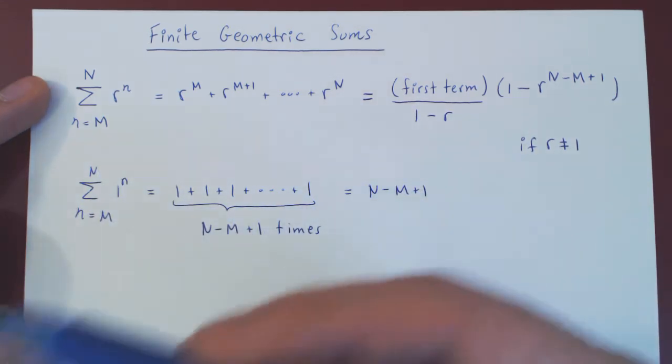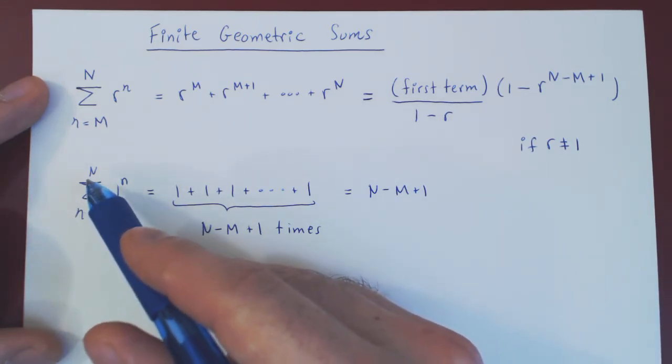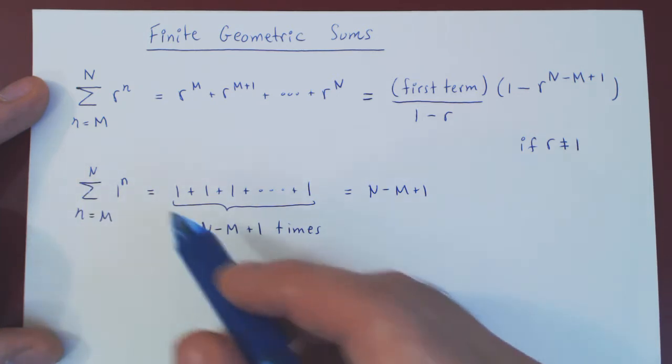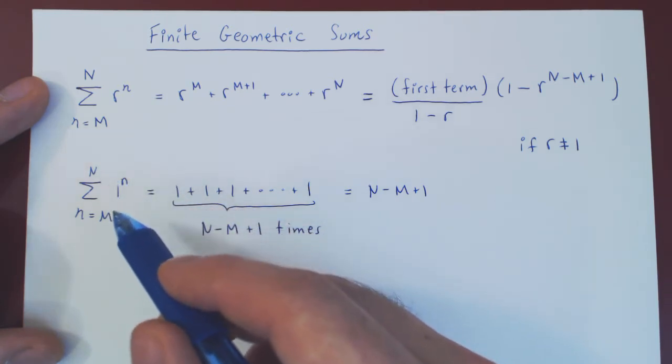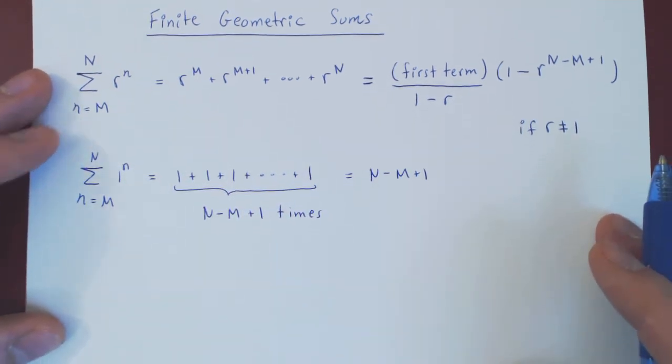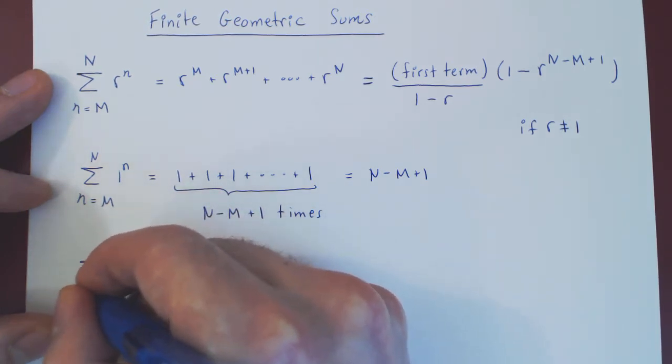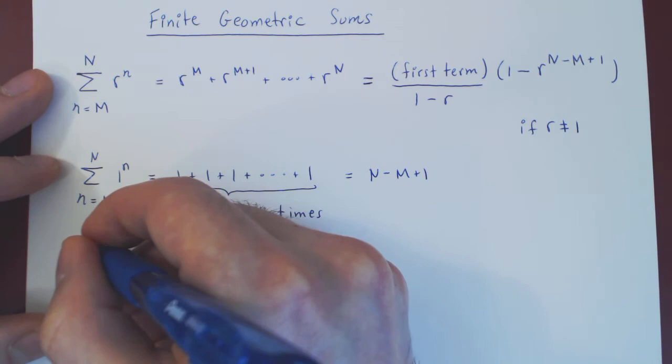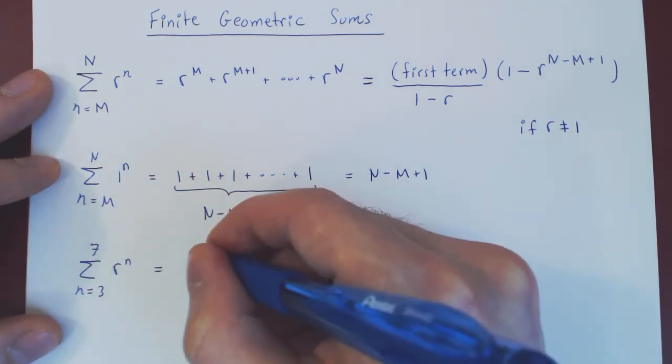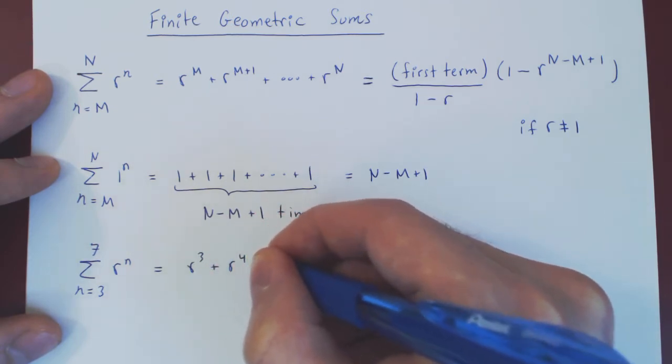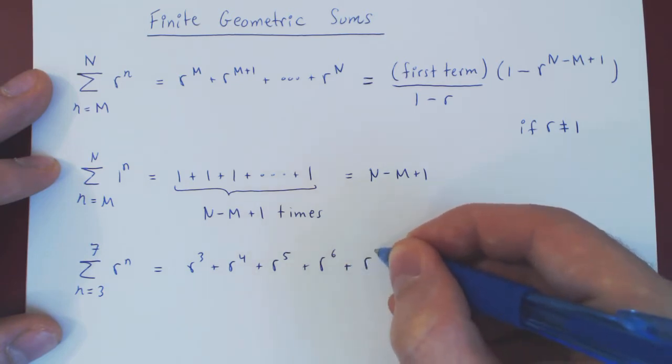And let me show you with a simple example, why when you sum from uppercase M to uppercase N, that you do not have n minus m terms, but you really have n minus m plus 1 terms. Let's look at just a very simple example. Suppose we start summing from, say, 3 to 7, r to the n.